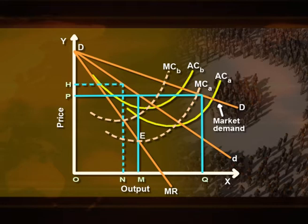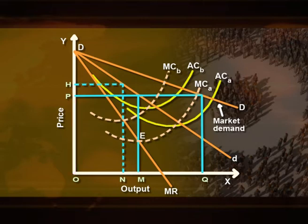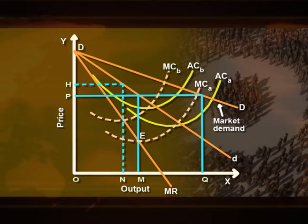Total output of both firms will equate with total market demand OQ, which equals OM plus OM at price OP. At price OP, profits earned by A and B would differ: firm A will be maximizing profits by selling output OM at price OP, while the profit earning of firm B will be below the maximum level because it earns maximum profits at output OM and price OH. Therefore, the profits of firm B will be less than firm A due to the differences in the cost of production.